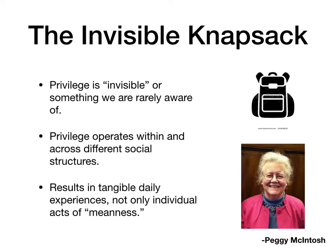McIntosh began theorizing about intersectionality — how similar people in some respects could have very different experiences based on other aspects of identity — and how privilege is not always about acts of meanness or intentionally putting someone in a less powerful position. Based on these reflections, she developed the idea of an invisible knapsack, a metaphor for privilege: something you carry around with you containing tools, maps, passports, and visas — things you need to move through the world without being bothered or made to feel uncomfortable. I encourage you to check out the linked essay and consider how these ideas apply to your own life.